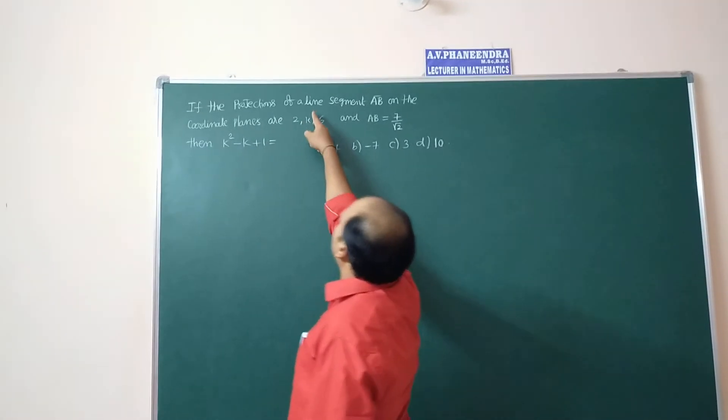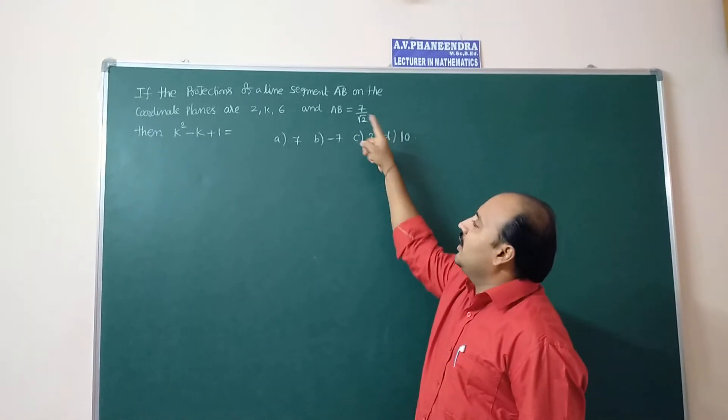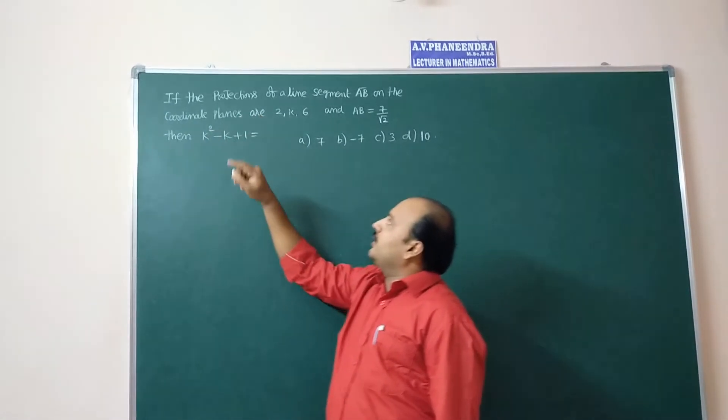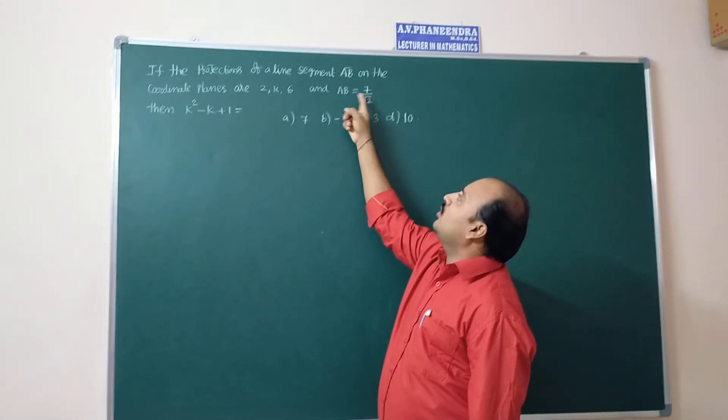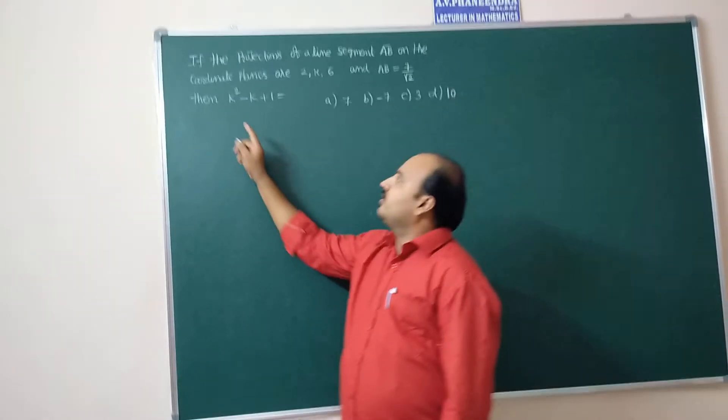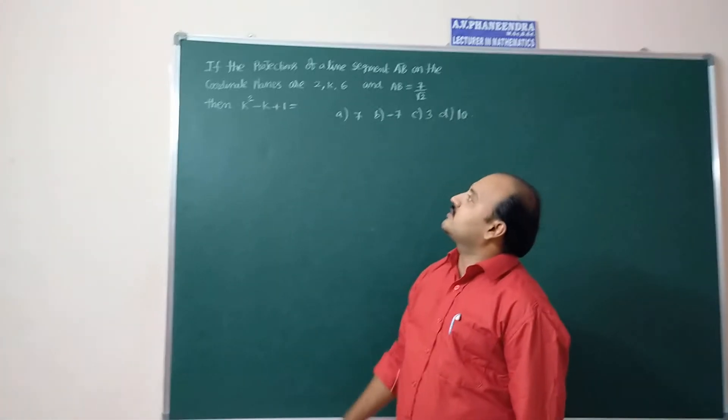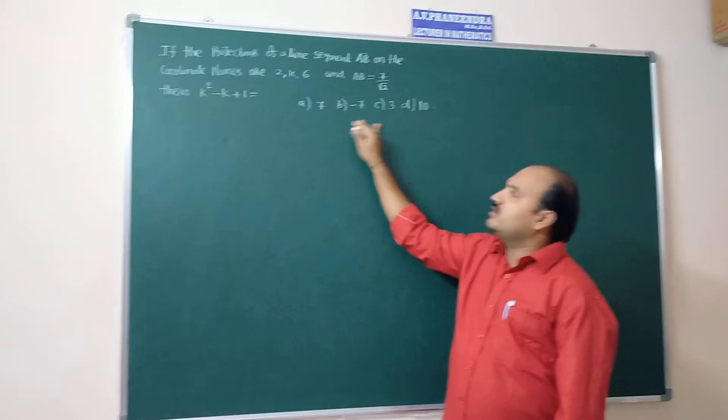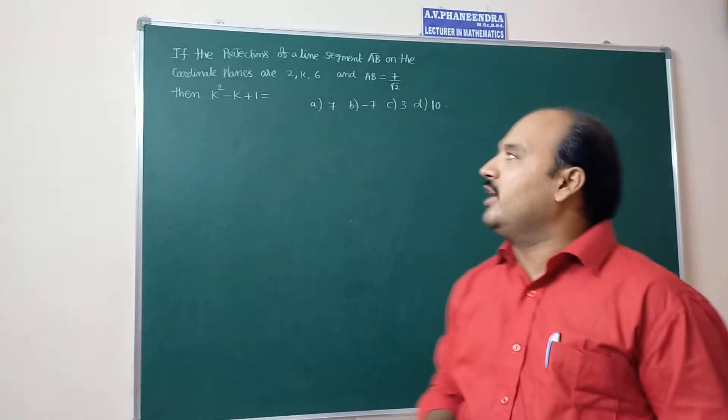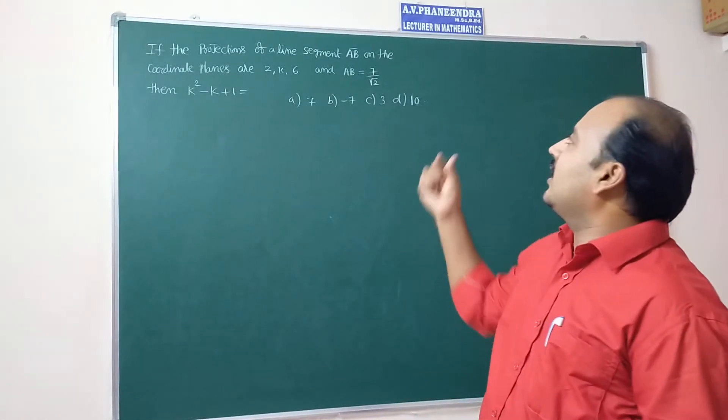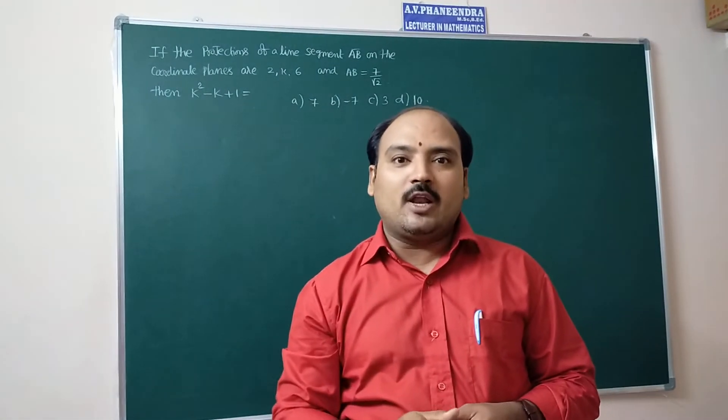If the projections of a line segment AB on the coordinate planes are 2, k, 6 and AB equal to 7 by root 2, then k square minus k plus 1 equals what? First we have to know the relation between the length of the projections and the line segment.